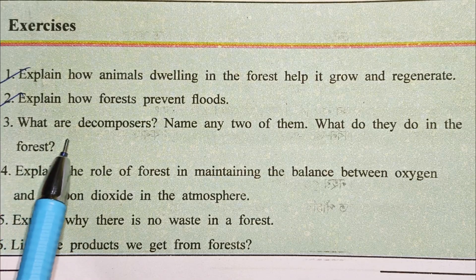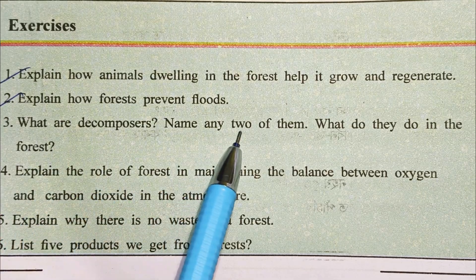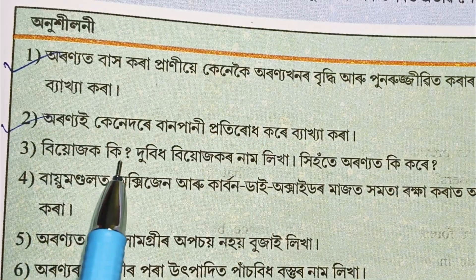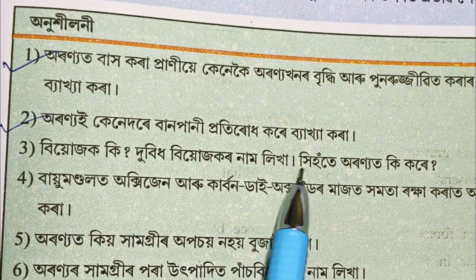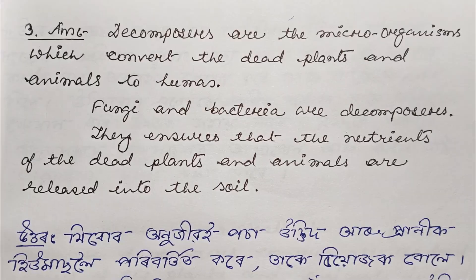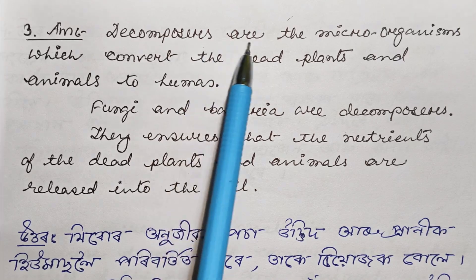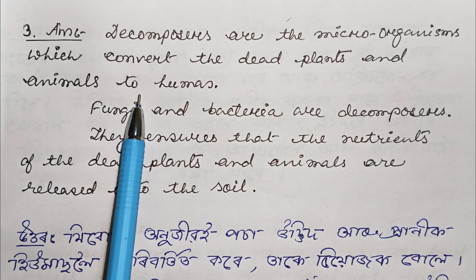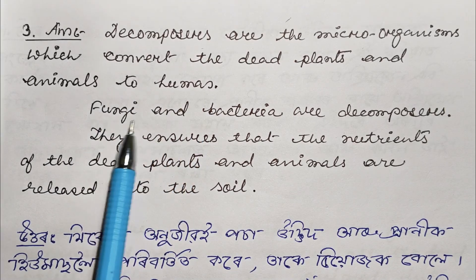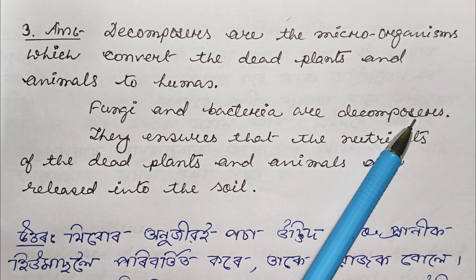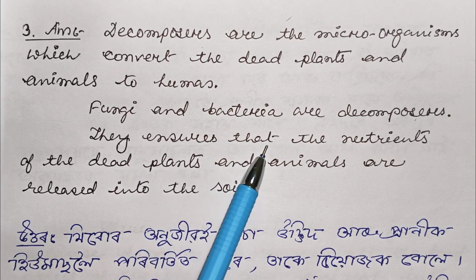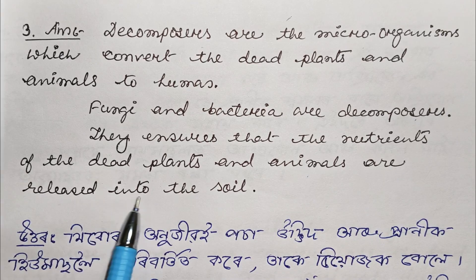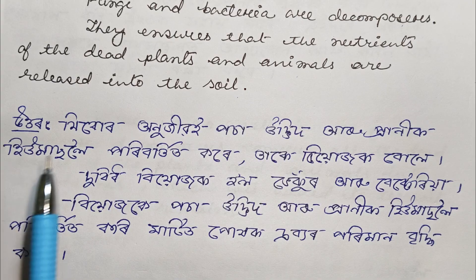Question number 3: What are decomposers? Name any two of them. What do they do in the forest? Decomposers are the microorganisms which convert the dead plant and animals to humus. Fungi and bacteria are decomposers. They ensure that the nutrients of the dead plants and animals are released into the soil.